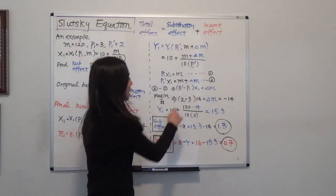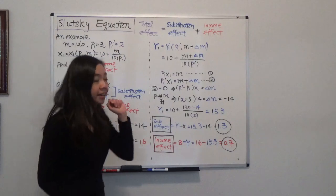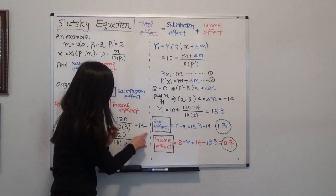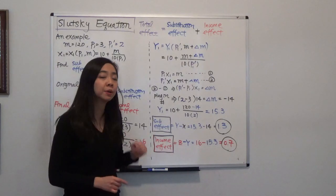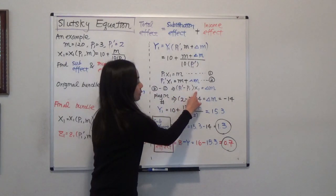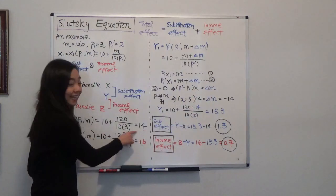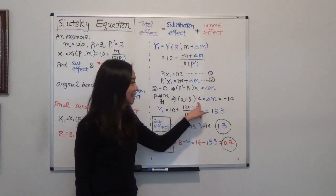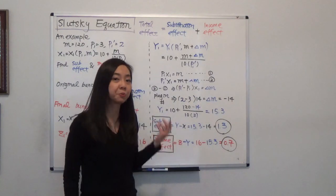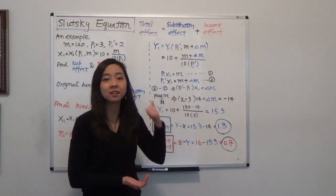I know the original price P1 is $3, the new price P1' is $2, and the original consumption X1 is 14 gallons. So how much money do I give or take away? We compute (P1' minus P1) times X1 = (2 minus 3) times 14 = delta M. Delta M equals negative 14, meaning when the price of milk goes down, I can take away $14 from you and you can still afford to buy the original bundle of 14 gallons.